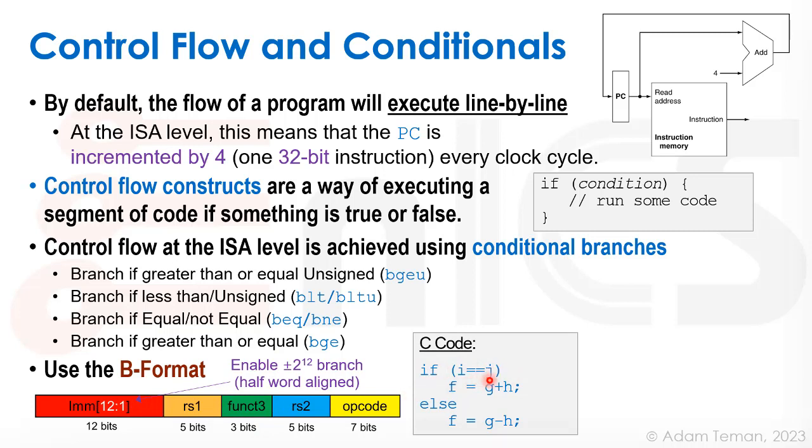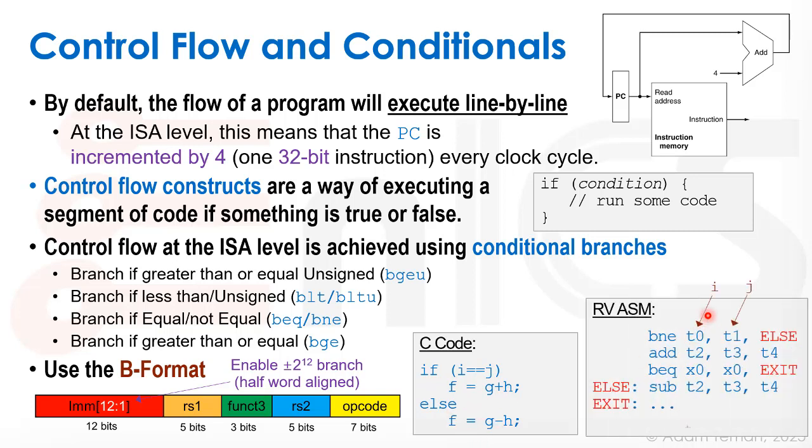And here is our RISC-V assembler. So I'm just gonna assume that i is stored in t0 and j is stored in t1, and then f is gonna be in t2, g is gonna be in t3, and h is gonna be in t4. That's what the compiler decided.